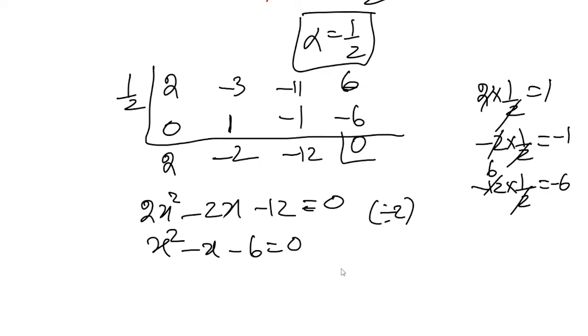Using the factor method, the last number is -6 and the x coefficient is -1. To get -6 with a sum of -1, we need -3 and +2. So -3 × 2 = -6, and -3 + 2 = -1.